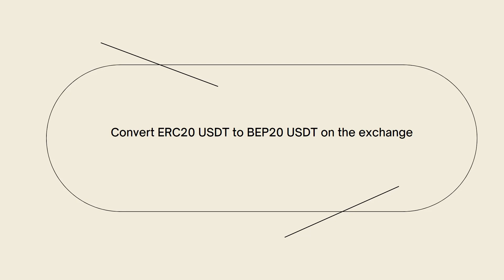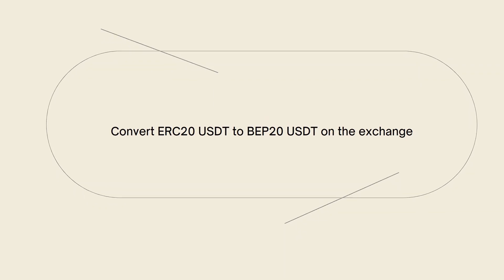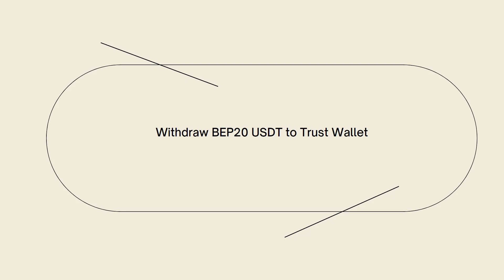After that, you need to convert ERC20 USDT to BEP20 USDT on the exchange. Once your ERC20 USDT has been successfully transferred, follow the exchange's instructions to convert it to BEP20 USDT. The exact process may vary depending on the exchange, but typically it involves selecting the desired trading pair — for example USDT/BNB or USDT/BUSD — specifying the amount, and confirming the conversion.